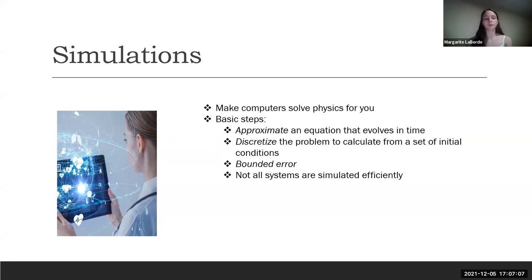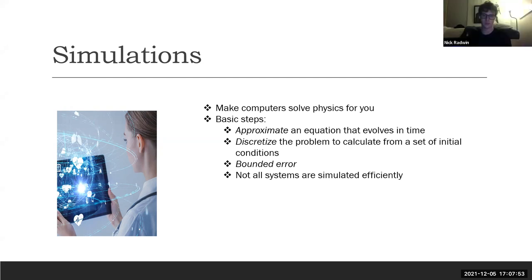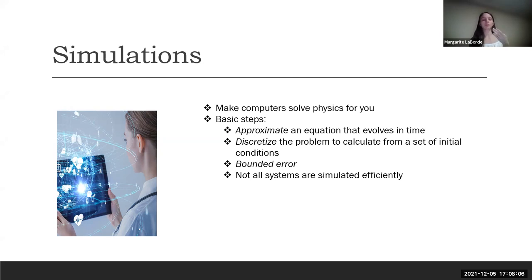So if you're not familiar with the idea of simulations, suffice to say it's just you take a physics problem and put it on a computer. The basic steps are: you have some equation to describe your dynamics, you approximate it to an equation that evolves in time with respect to position and momentum. Then you discretize the problem, cut it into chunks so you can evaluate it on a computer, since computers can't do completely continuous solutions. You want to do this with bounded error so you can approximate it well enough to get an answer that agrees with nature's answer to within some arbitrary threshold of confidence.